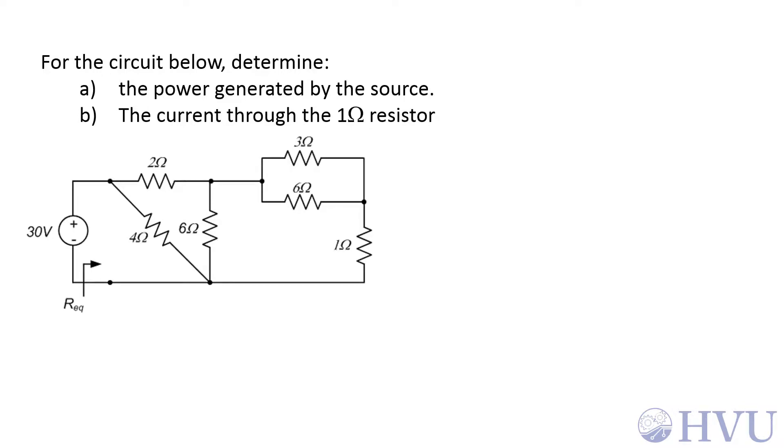The first thing we want to find out about this circuit is how much power is generated by the source. In order to do that we need the current, so I'm going to define a current direction I sub S, and then power will equal 30 volts times I sub S. The easiest way to do that is to reduce this entire circuit, find an equivalent resistance, and then divide the source 30 volts by that equivalent resistance.